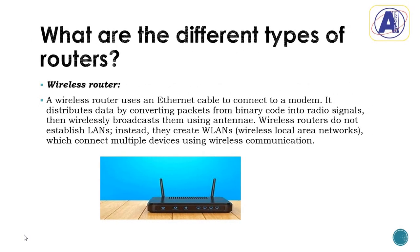Now, what are the different types of routers? We have a wireless router. A wireless router uses an Ethernet cable to connect to a modem. It distributes data by converting packets from binary code into a radio signal, then wirelessly broadcasts them using antennas. Wireless routers do not establish a LAN — they establish a WLAN, a wireless local area network, which connects multiple devices wirelessly. When you use an internet cable to connect your computer to access the internet, that's a LAN. With wireless, you just connect to Wi-Fi.